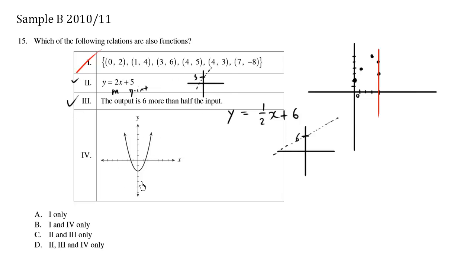And this parabola here, this quadratic, this here also passes the vertical line test everywhere. Every single line we draw, it's only crossing once. So choices 2, 3, and 4 are all correct.